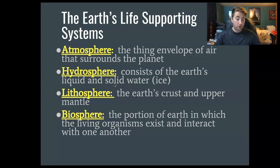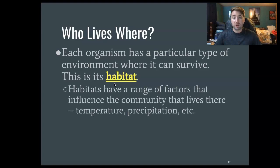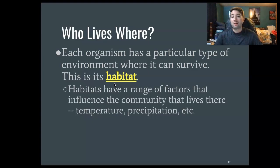So who lives where? If we're talking about where an animal or plant lives, we're talking about its habitat. Habitats are usually defined by a collection of different factors. The two most important are temperature — how hot or cold is it — and precipitation, which is the amount of rain, snow, or really any form of water falling from the sky. Animals and plants have things that they like. Some plants like really dry conditions where others can't live — a cactus is an example. Cacti are really adapted to dry conditions.